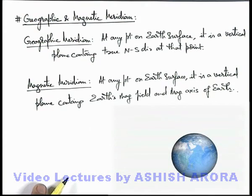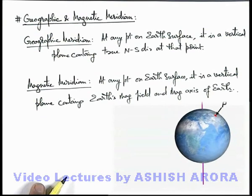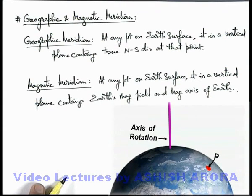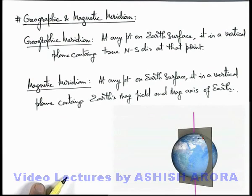To understand both of these, let's look at this situation. Here you can see this is our Earth, and we are treating this vertical line as its axis of rotation. If we consider a point P on the surface of Earth and zoom into the picture, we can see at point P these are the directions north, south, east, and west. The north-south direction is the one which lies in a vertical plane containing Earth's axis of rotation.